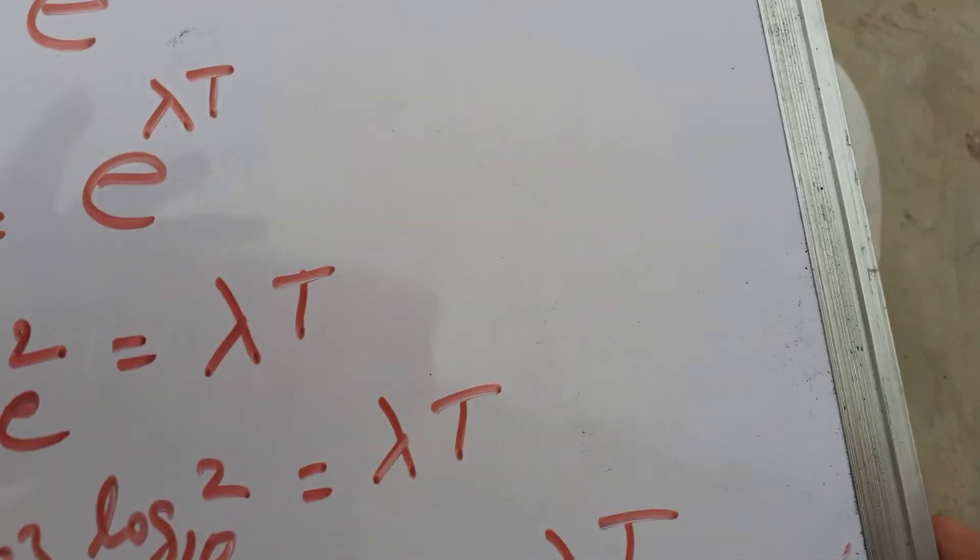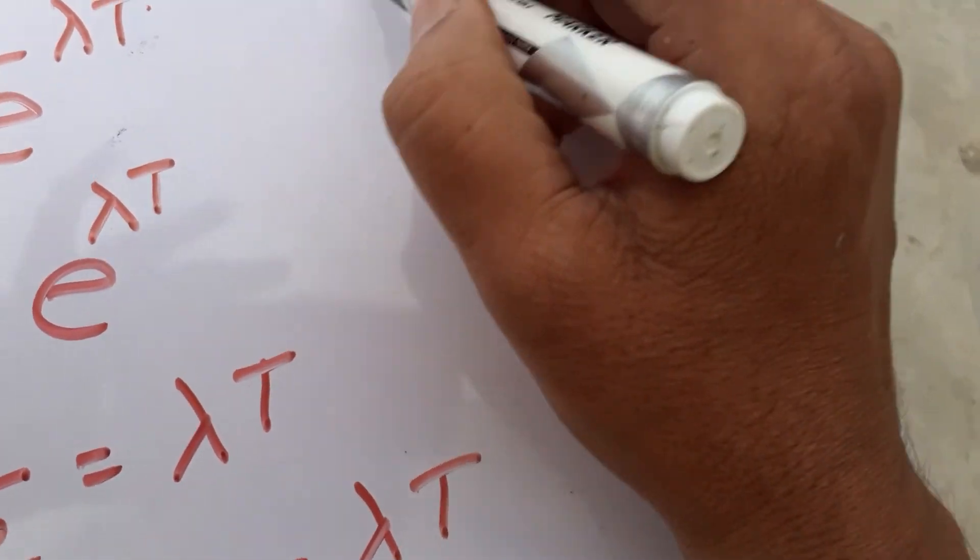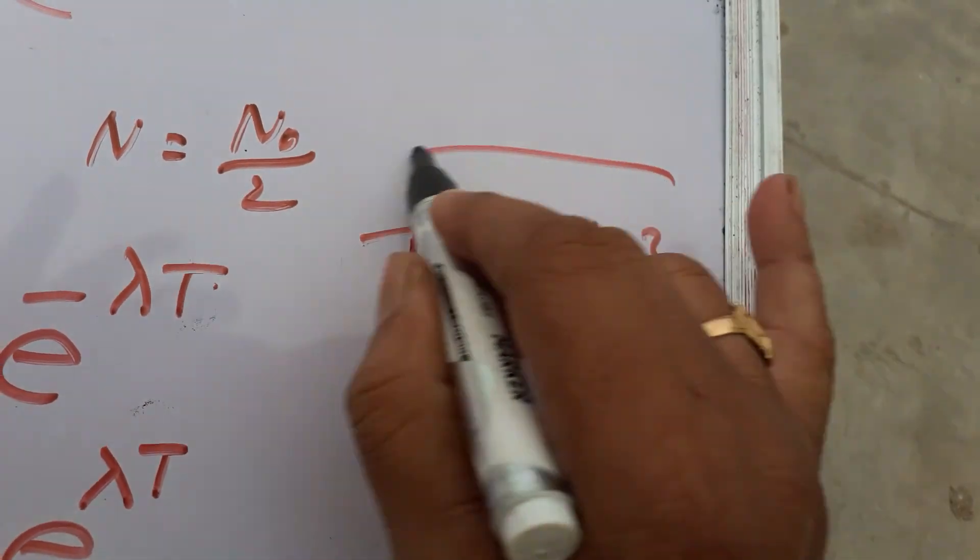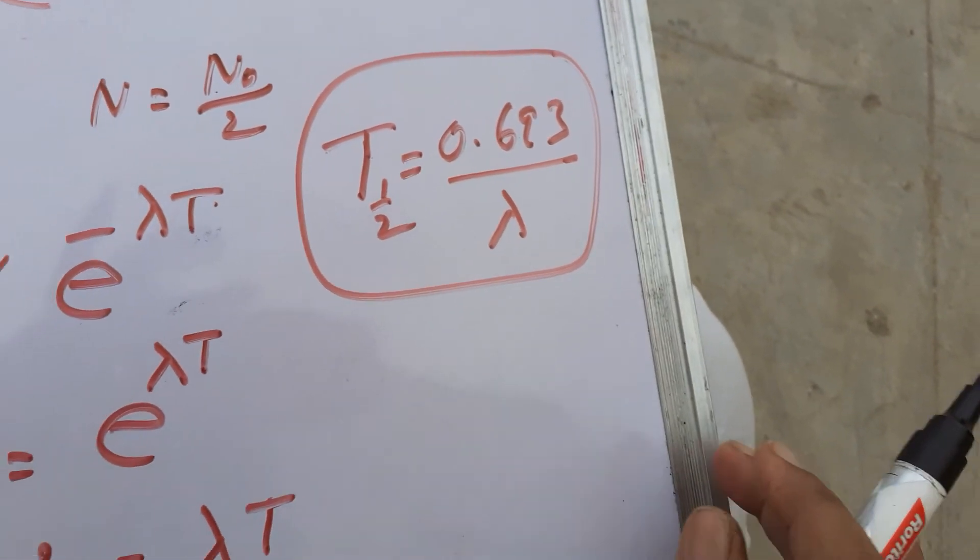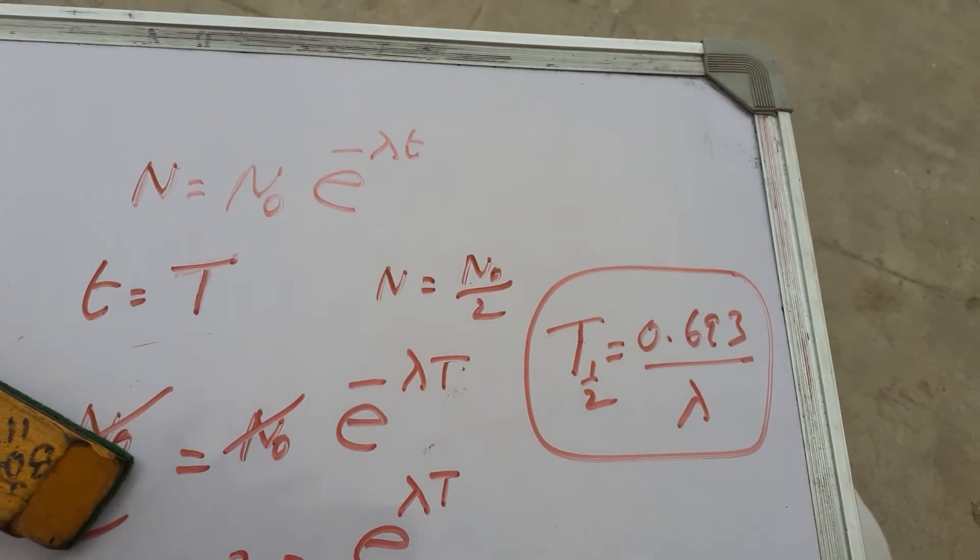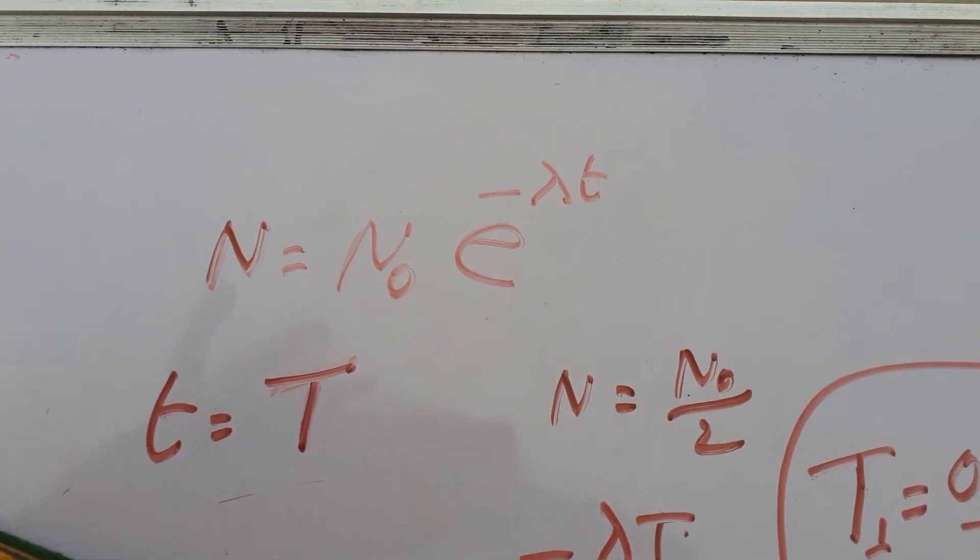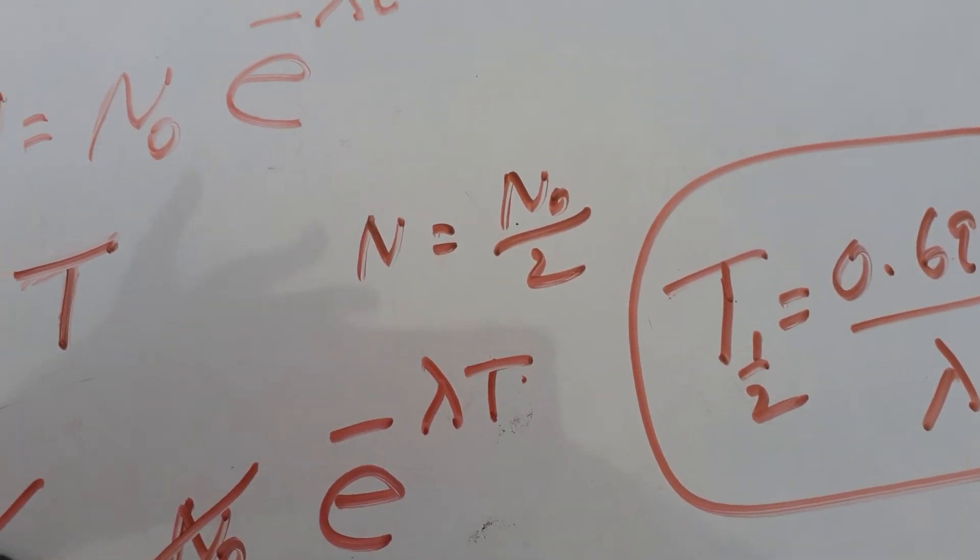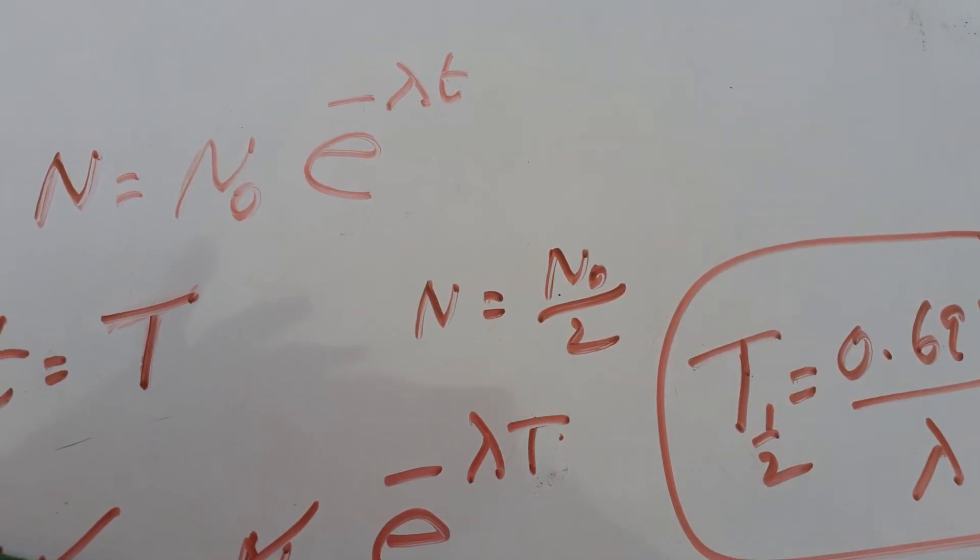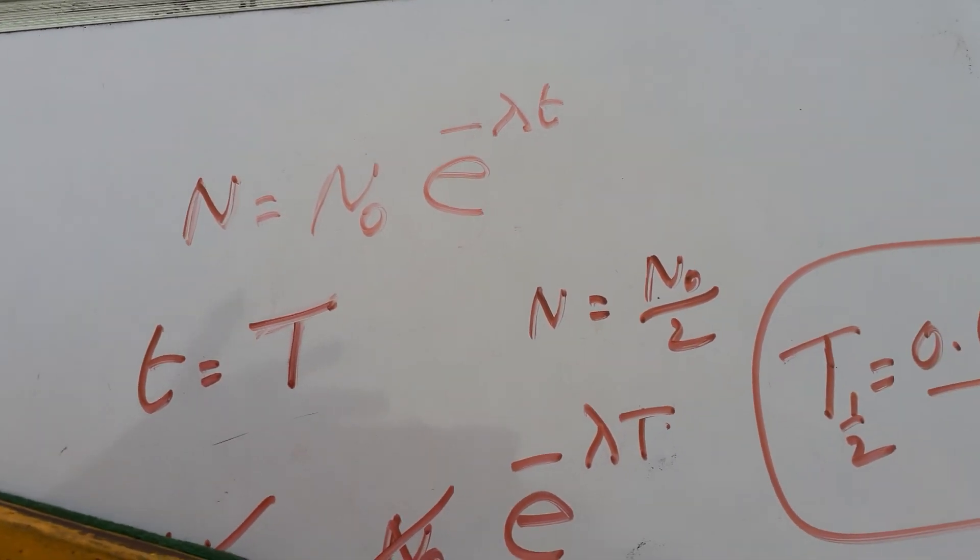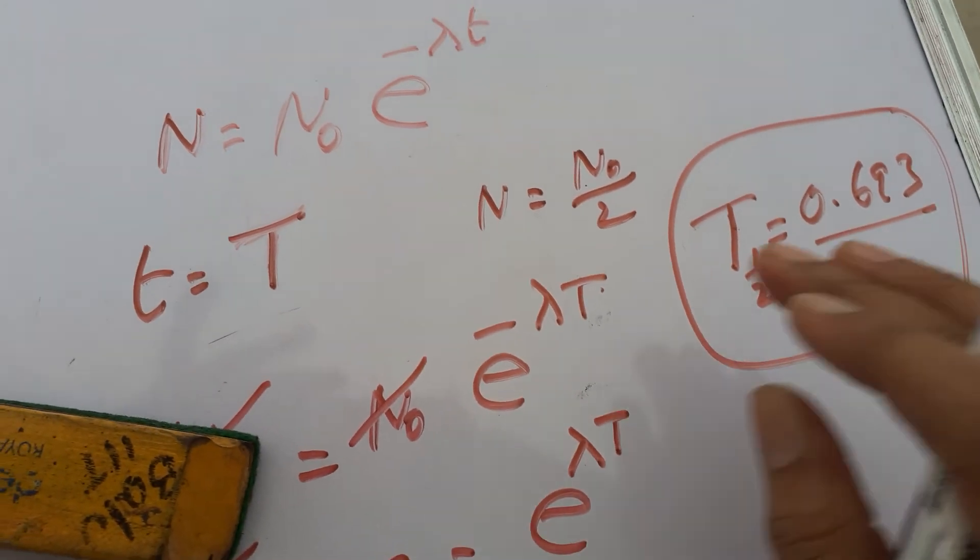Therefore, T, the half-life period, equals 0.693/λ. Lambda is a constant known as the decay constant. So this is a use of logarithms in physics. Conversion of log base e into base 10 is more important, and we use the other formulas also: log(a × b) = log a + log b, log(a/b) = log a - log b.